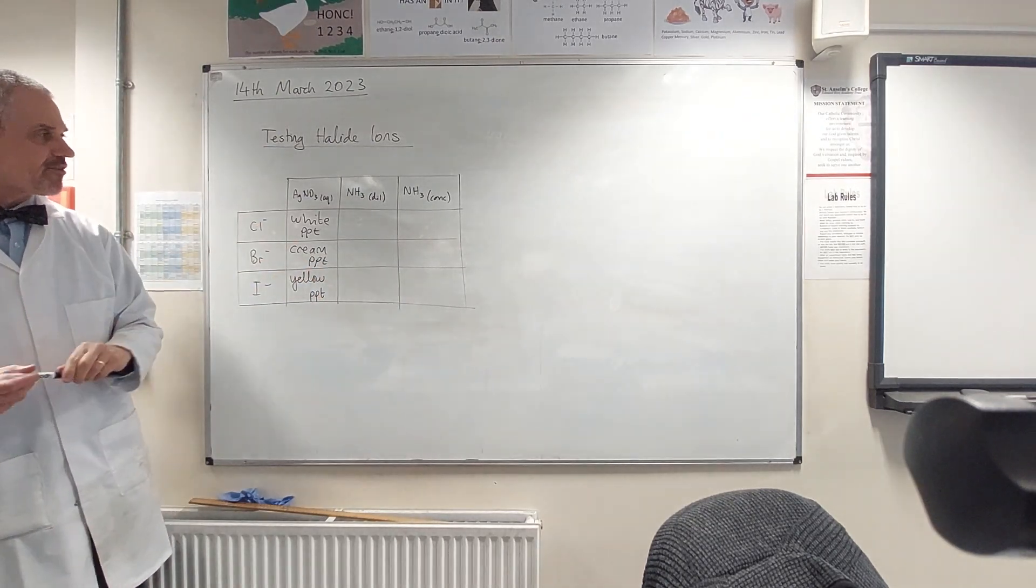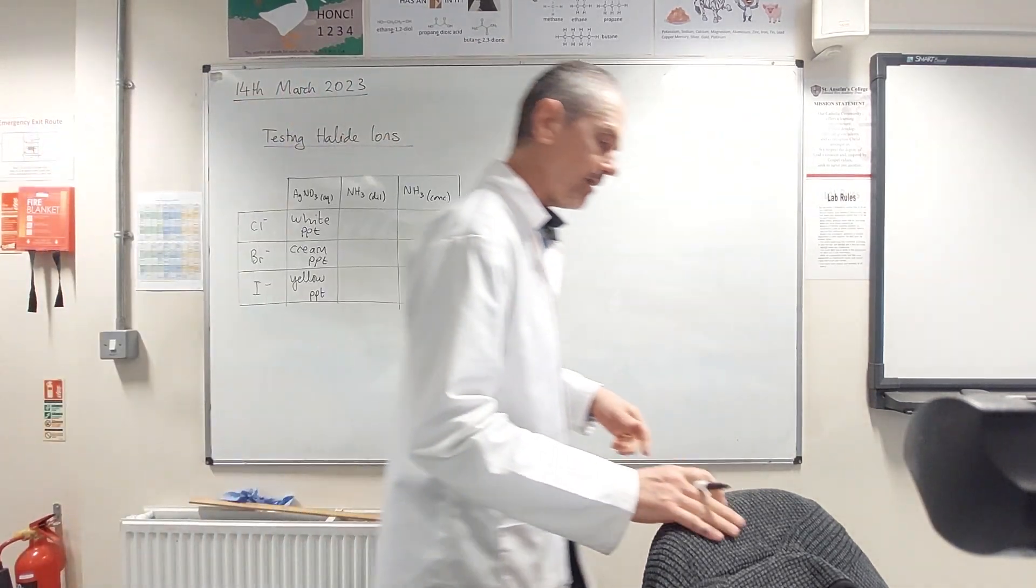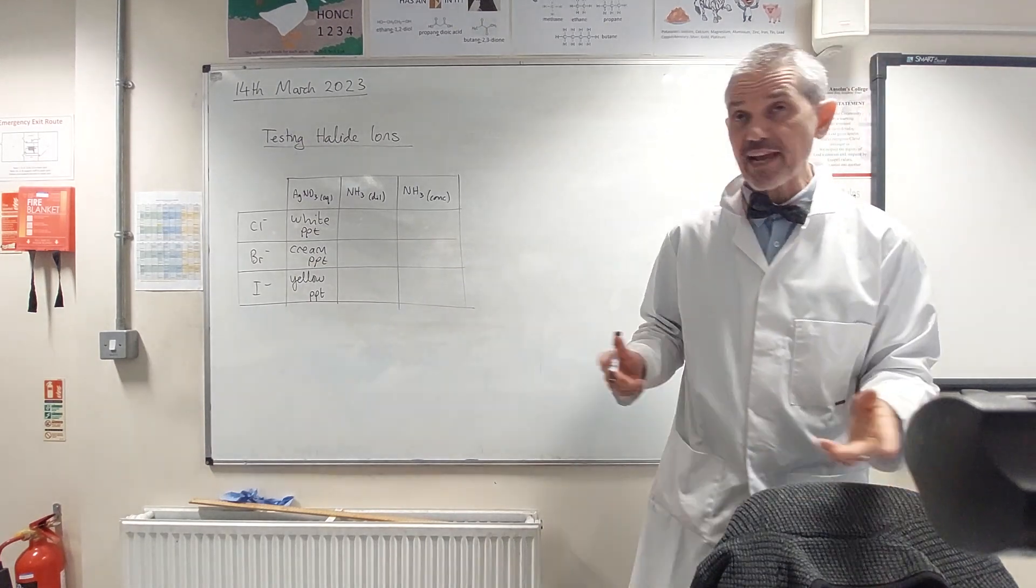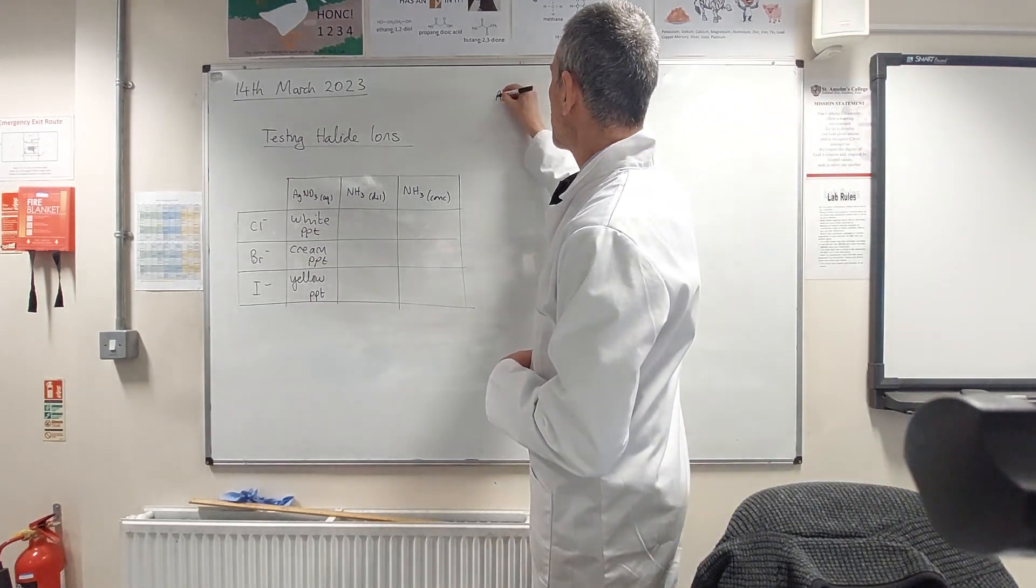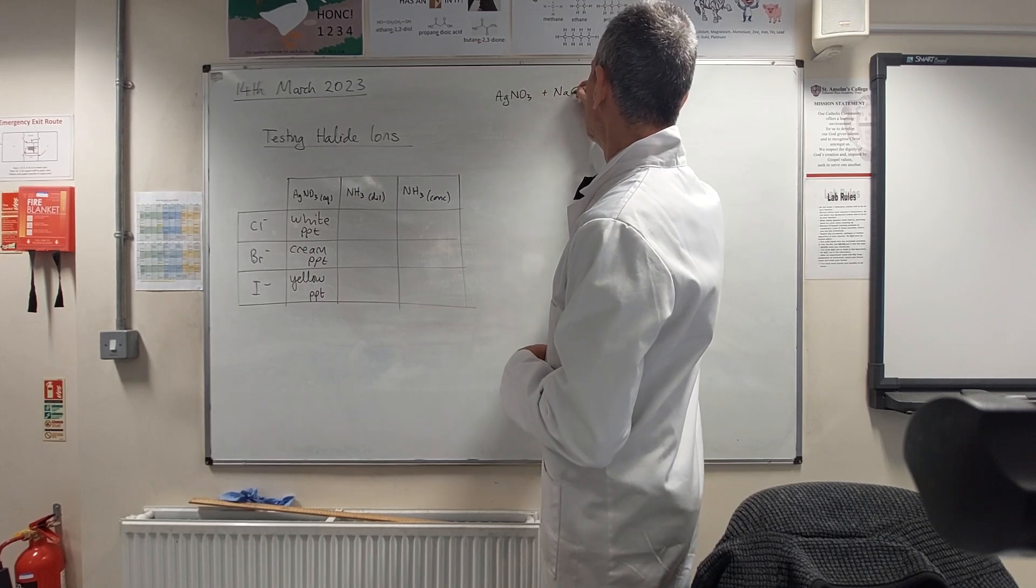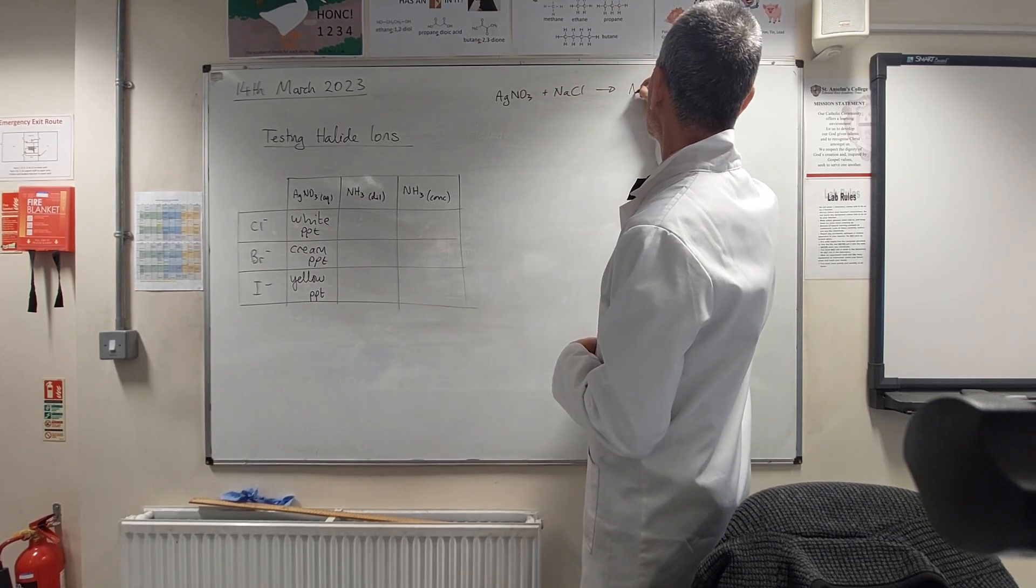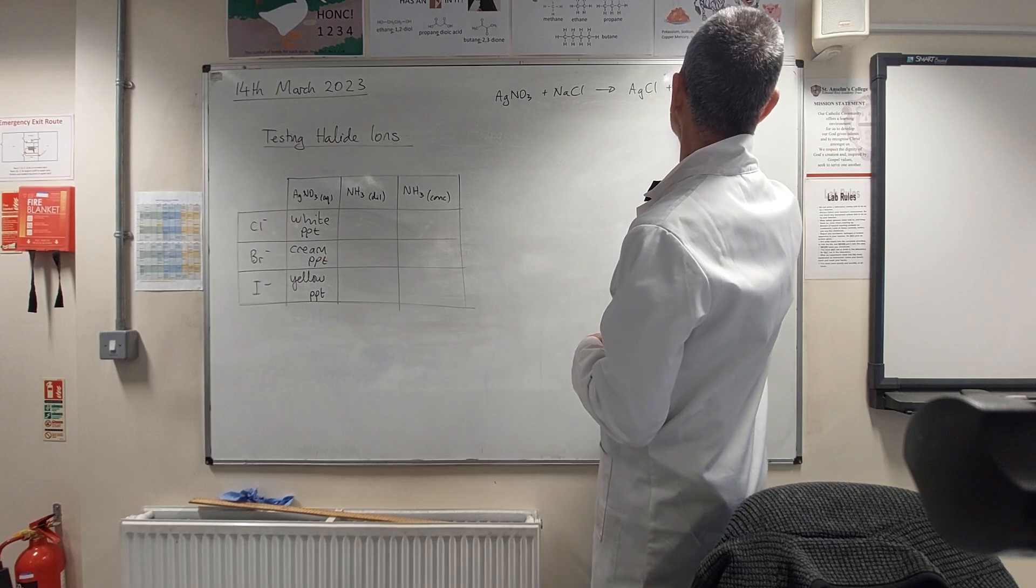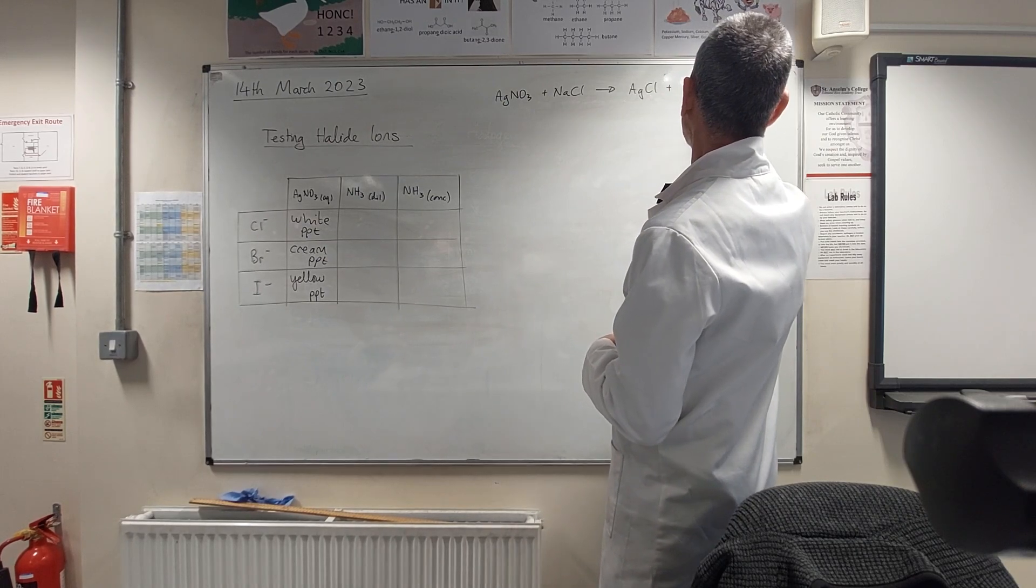So, again, one way of writing the reaction equation is we could write out the whole thing, blah blah blah, and where are we, NaNO3.